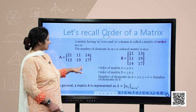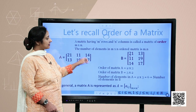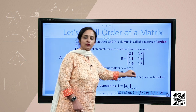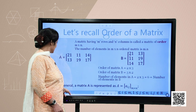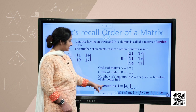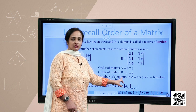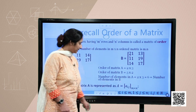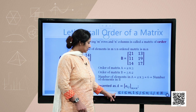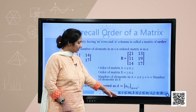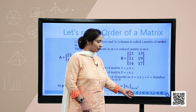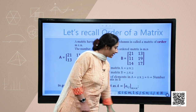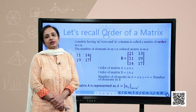The order of matrix A is 2 by 3, so the number of elements is 6. The order of matrix B is 3 by 2, so the number of elements is also 6. In general, you can write matrix A as A equals A-ij of order m by n, where i is between 1 and m both included, j is between 1 and n both included, and i and j both belong to the set of natural numbers.